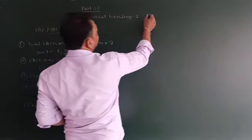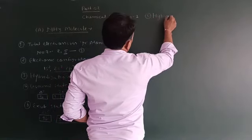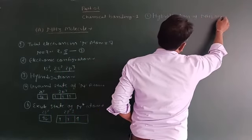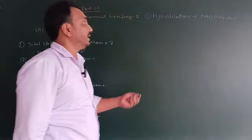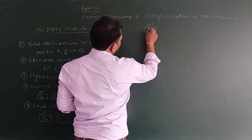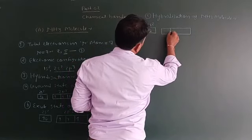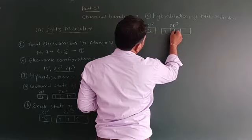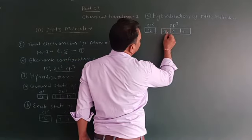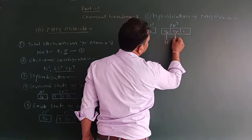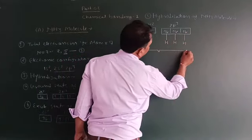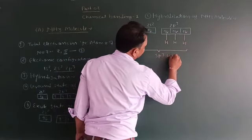Part C: hybridization of NH3 molecule — बहुत important है, बहुत बार exam में आया है। Ground state 2s2, 2p3 as such रखो। 3 hydrogen fill कर दो — हर hydrogen का electron nitrogen से covalent bond बनाएगा। 1s orbital + 3p orbitals मिलकर sp3 hybridization देते हैं।